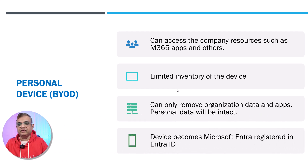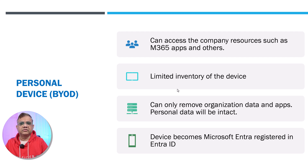The second category is personal devices — here I mean bring your own device. Think about a scenario where a university student or contractor has been given a company email address configured on their personal system. The organization will not want full control over that device. For personal devices, the user can access company resources such as Microsoft 365 apps like Word, Excel, and Teams. The organization will have limited inventory visibility on the device.